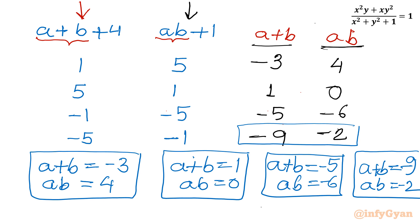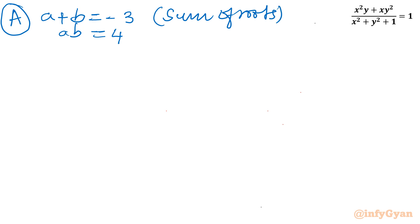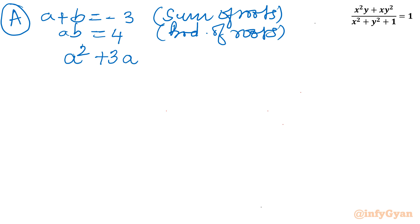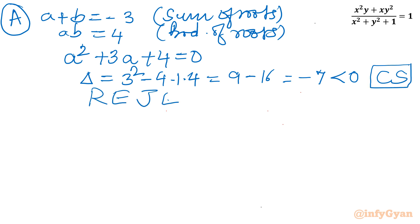For System A (a+b = -3, ab = 4): forming the quadratic a² + 3a + 4 = 0, the discriminant is 9 - 16 = -7, which is negative, so complex solutions are generated. We reject System A.